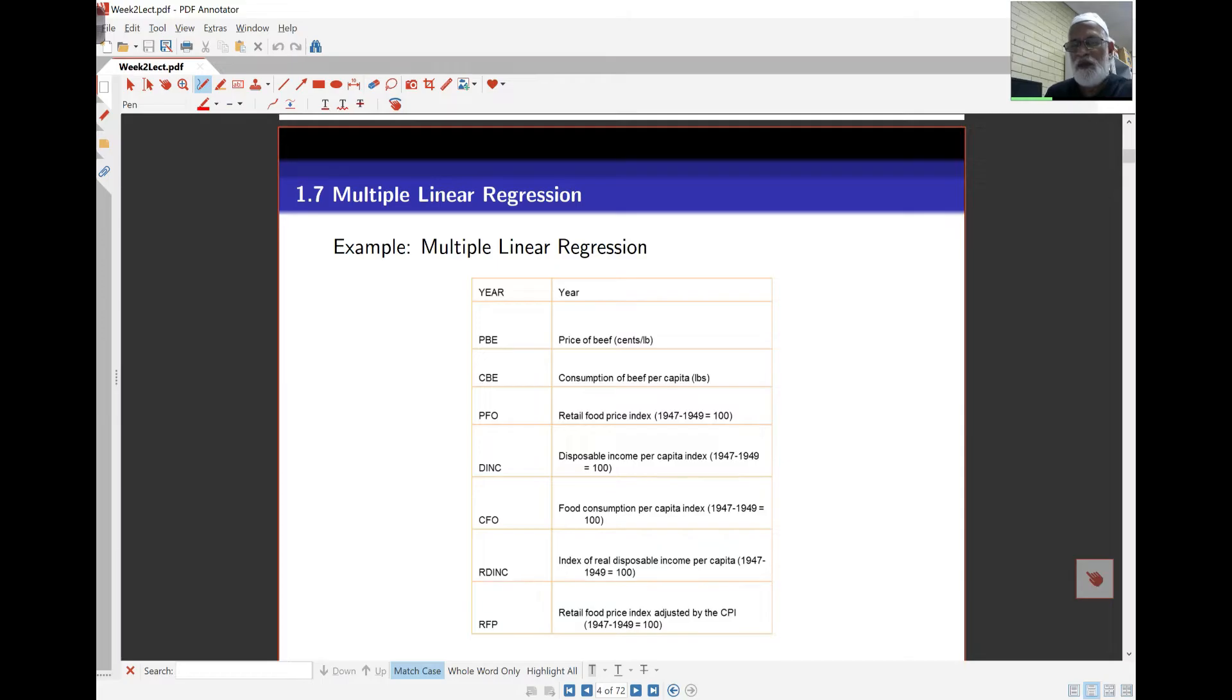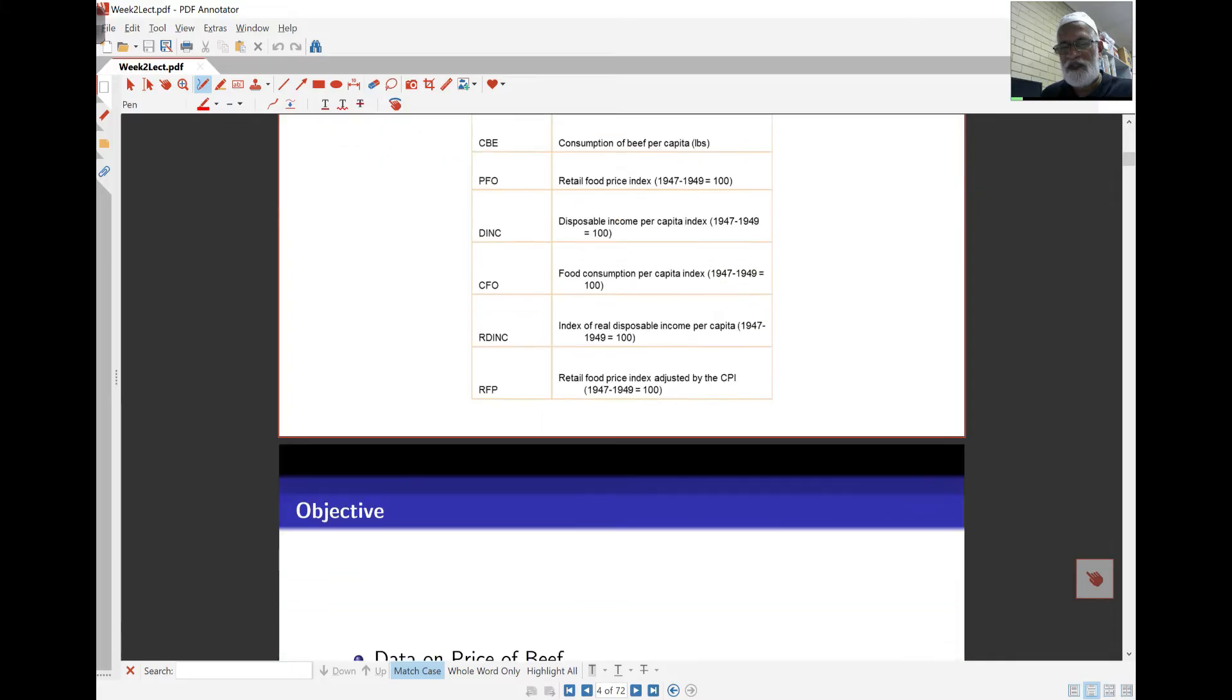Here's an example on what's called beef data, price of beef. So here we've got the year, the PB which is price of beef in cents per pound. This is British data. Then the consumption of beef per capita and all the other variables as well. You can look at them yourself. What we're going to do is take a look at a regression of the price of beef on all the other variables here.